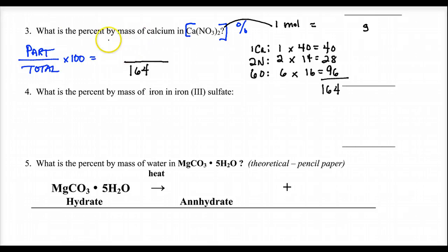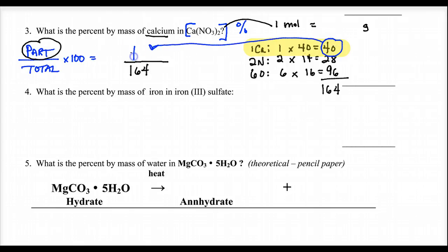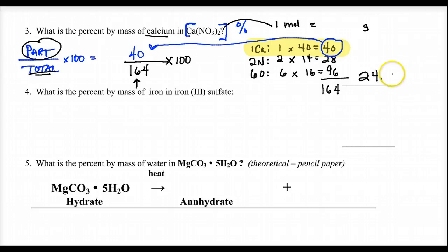What's the part we're looking for? They're asking for calcium. The calcium contributes 40. So 40 goes on top: 40 over 164 times 100. That gives us 24.4%. That is the percent by mass of calcium in calcium nitrate.